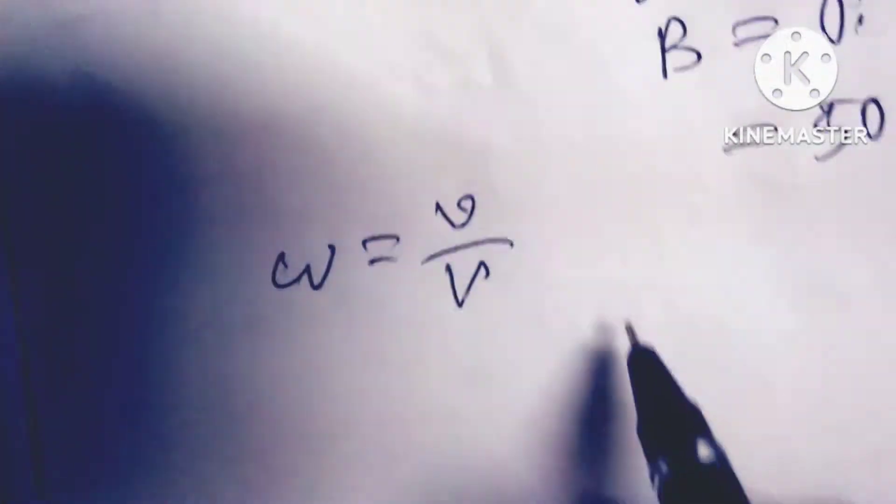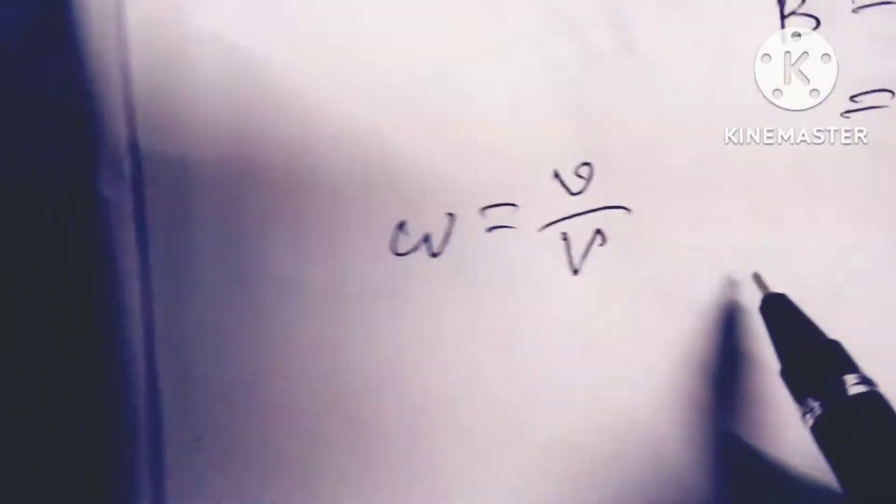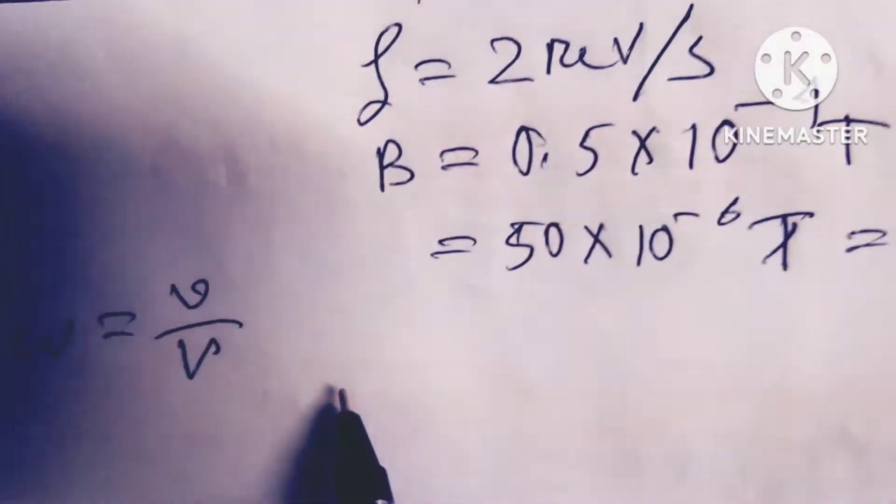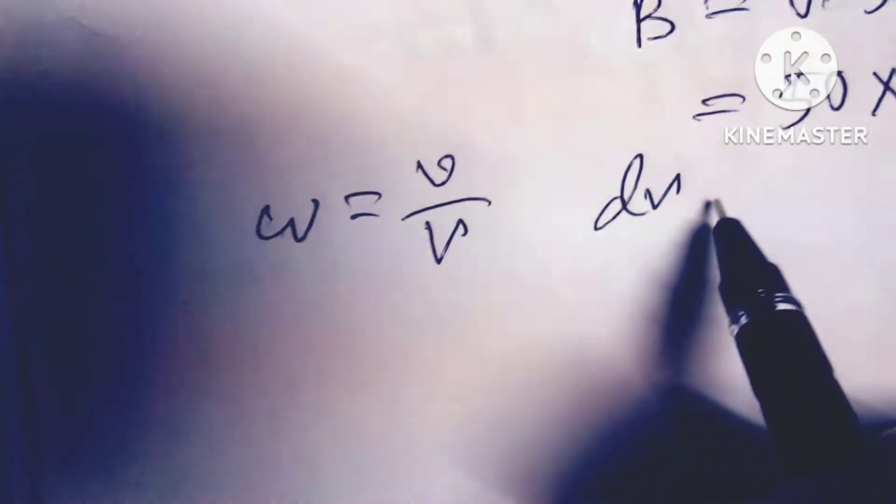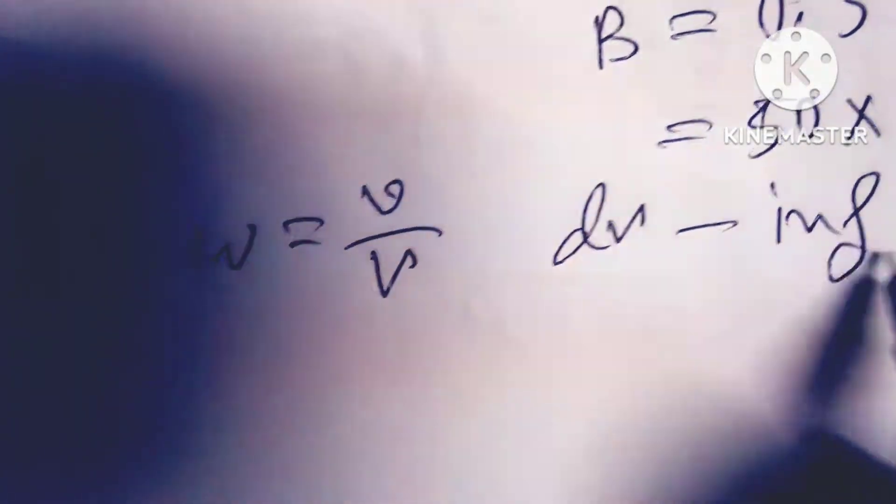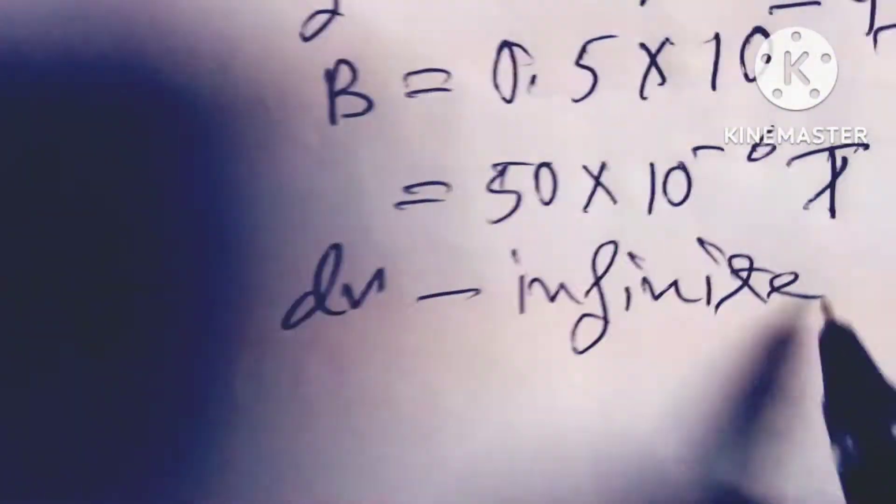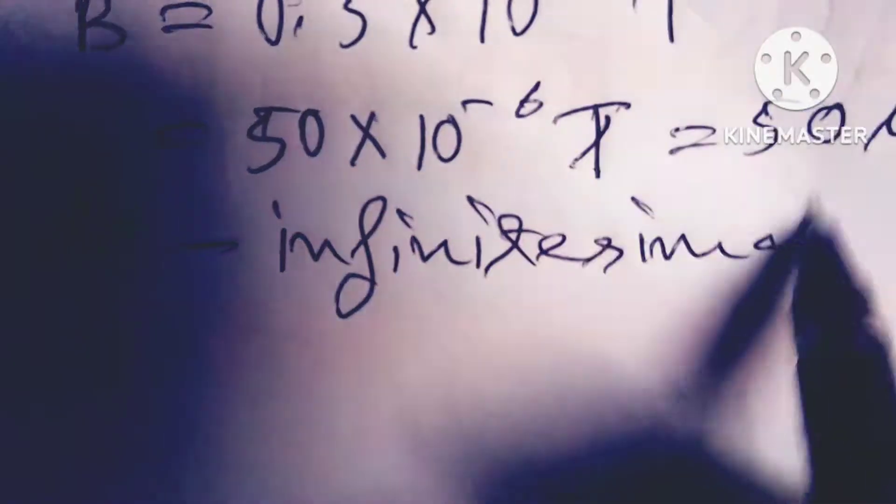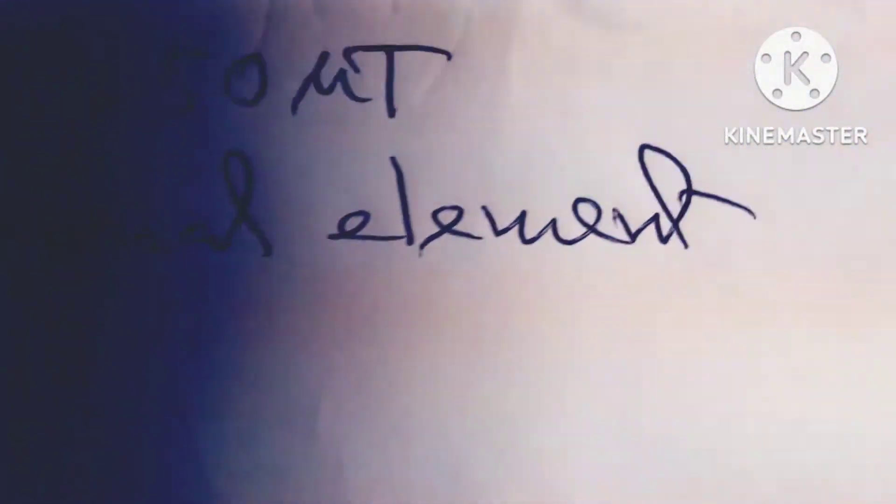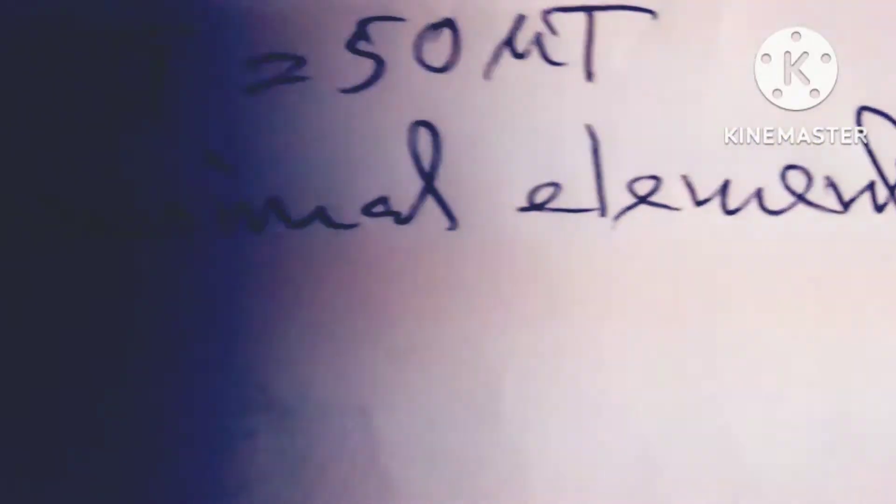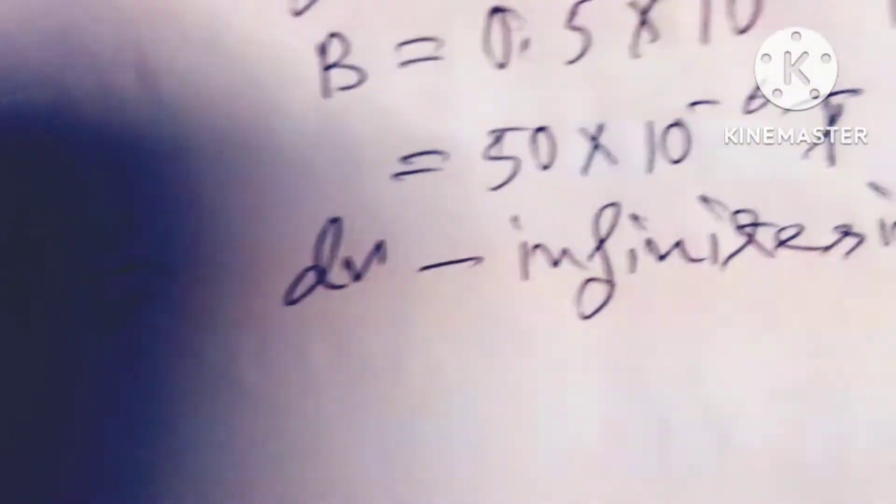So friends, the linear speed V of the different segments of the blades are different, but the angular speed omega equals V by R is same for all segments. Therefore we take an infinitesimal element of the blade dr.